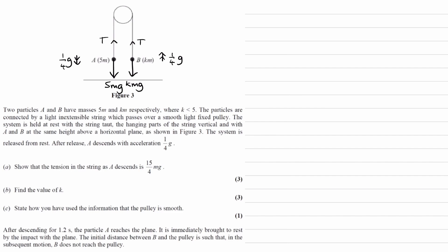So we're trying to show for part A that the tension in the string as A descends is 15/4 mg. So I'm going to write out two equations of motion for A and B. For A, the overall force is downwards. So then 5mg minus T, that will be the resultant downwards force. And that will then be equal to ma, 5m is the mass of A times acceleration. Call that equation 1.